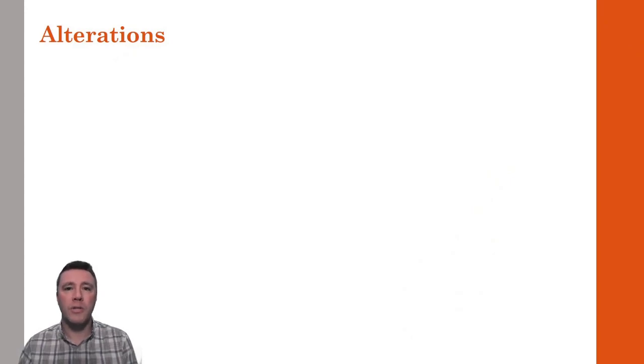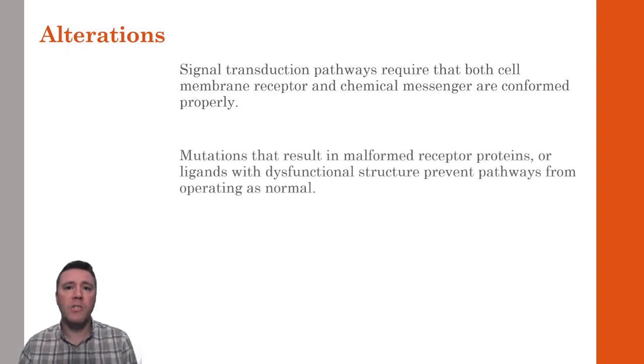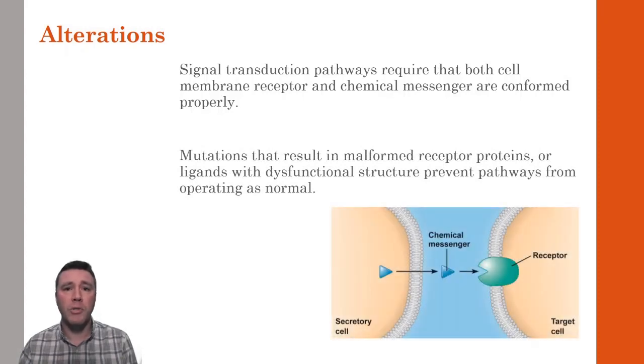In order for signal transduction pathways to function as intended, both the ligand and the receptor protein must be conformed properly. If a cell possesses a mutation that prevents it from constructing a receptor protein with the proper shape, that would result in a cell incapable of detecting the presence of a given ligand. Additionally, were a cell to have a mutation that disallowed it from manufacturing ligands properly, then no target cell would be able to receive that signal.